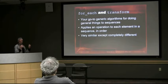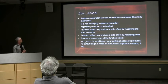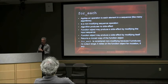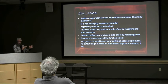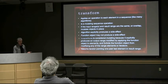Both for_each and transform apply an operation to each element in a sequence in order. They're very similar except where they're completely different. For_each is probably the most used algorithm — it's a non-modifying sequence operation that produces no side effect in the algorithm itself, but your function object could make changes if it wants to. It's considered non-modifying because it produces no output range, but relies on the function object for mutation.